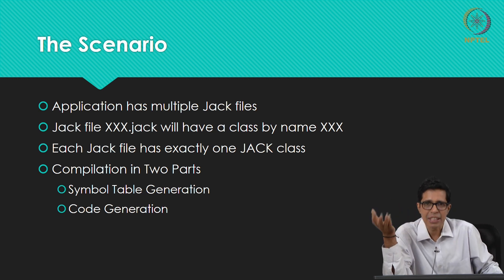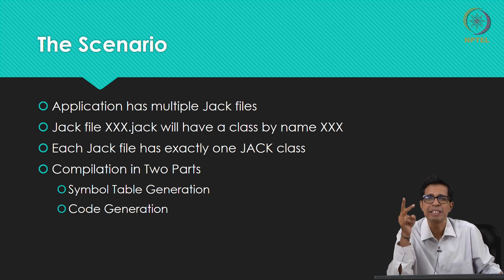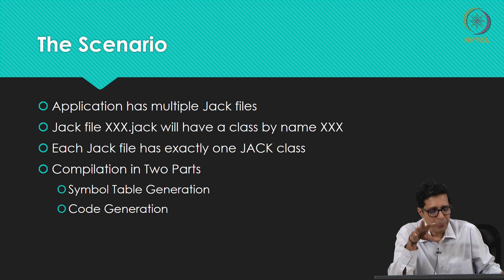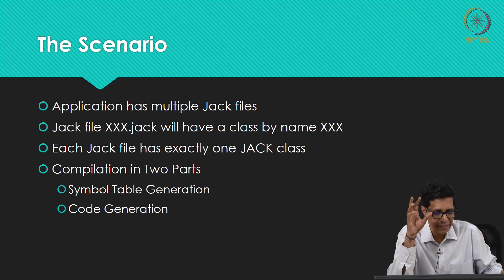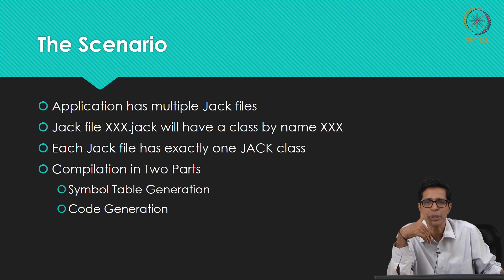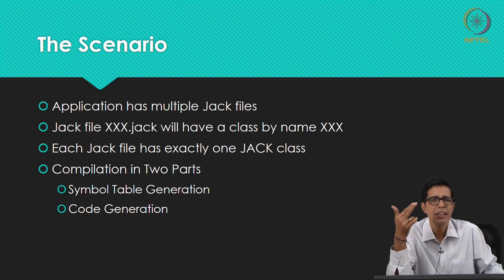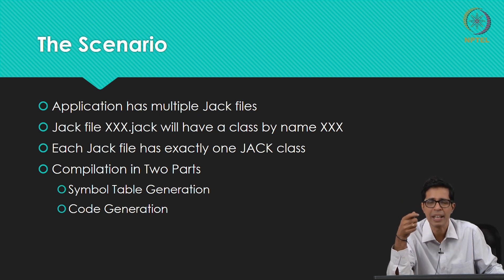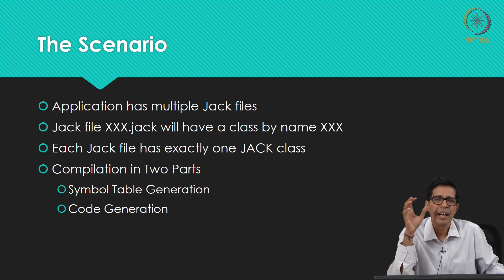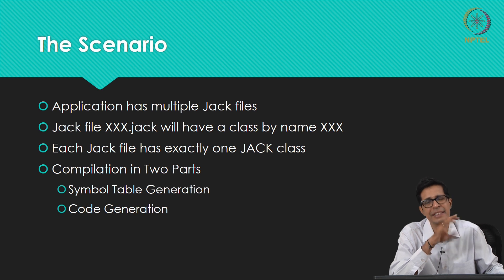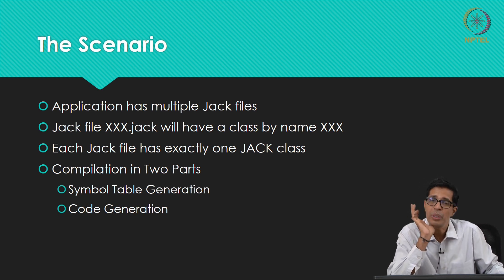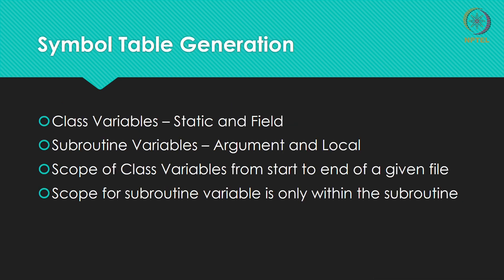As we mentioned in module 10, the compilation will be in two parts. One part is symbol table generation — we will be generating the symbol tables. The next part would be code generation. The symbol table will be used for compiling and actually generating the code, as described in the theory part in module 10.